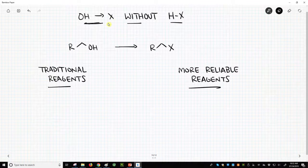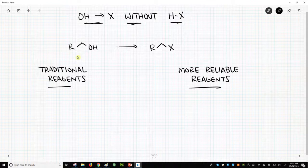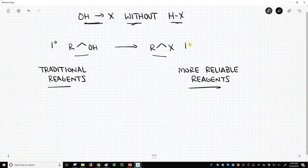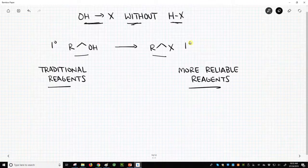So we're going to convert our OH to a halogen, that's supposed to be an X, but we're not going to use HX. Here is a cartoon of our transformation toward the top of the screen. I've shown a primary alcohol going to a primary halide. These methods will work for any substitution of halide.